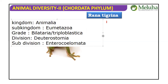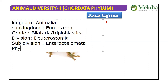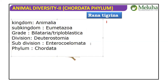So to summarize: Kingdom Animalia, Sub Kingdom Eumetazoa, Grade Bilateria or Triploblastica, Division Deuterostomia, Subdivision Enterocoelomata, and Phylum Chordata.